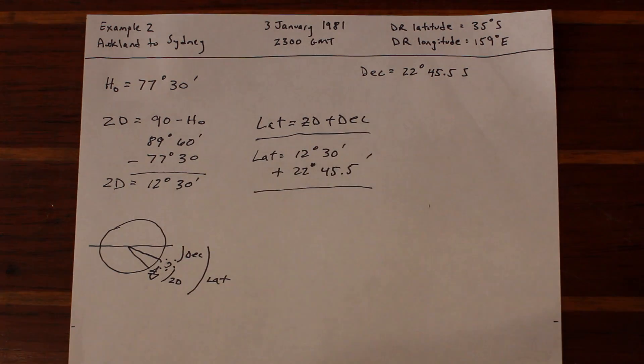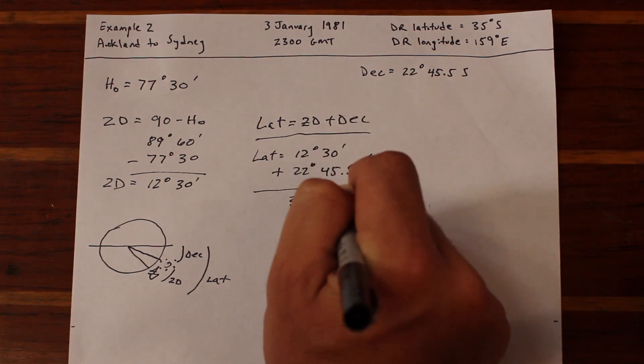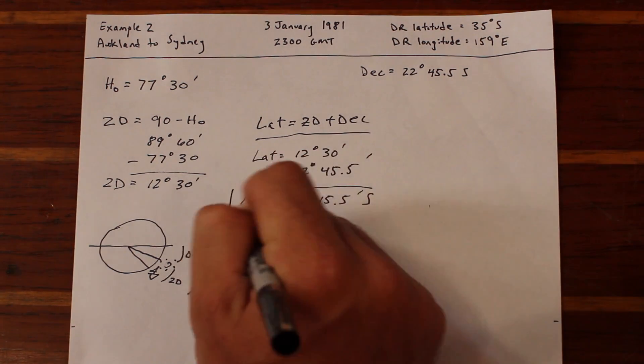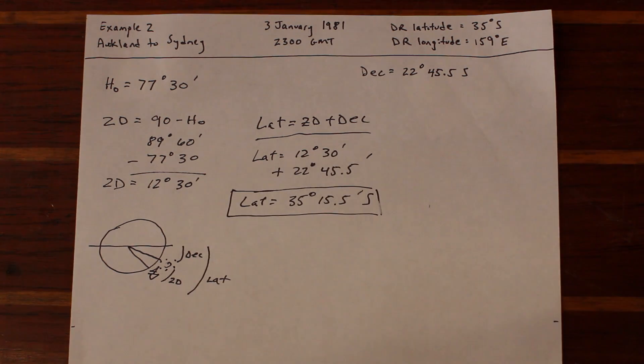We draw our typical picture, and we see that the latitude will be equal to zenith distance plus declination. And the math gives us an answer of 35 degrees and 15.5 minutes south for a latitude.